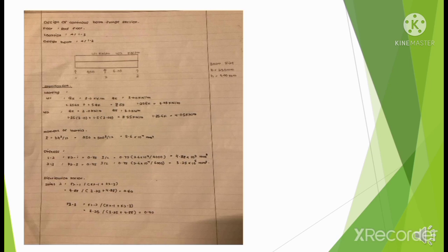Distribution factor at the joint: the formula is (K2 - 1) divided by Q, plus (K2 - I) plus Q, plus (K2 - 3). The answer is 0.60. For F2-3, the answer is 0.40.